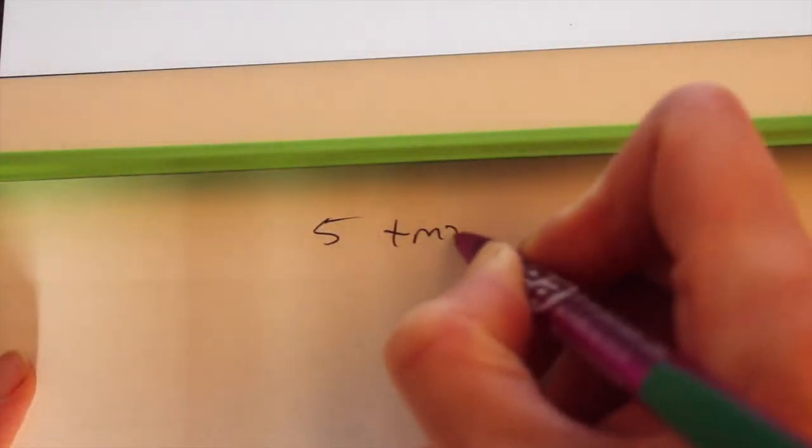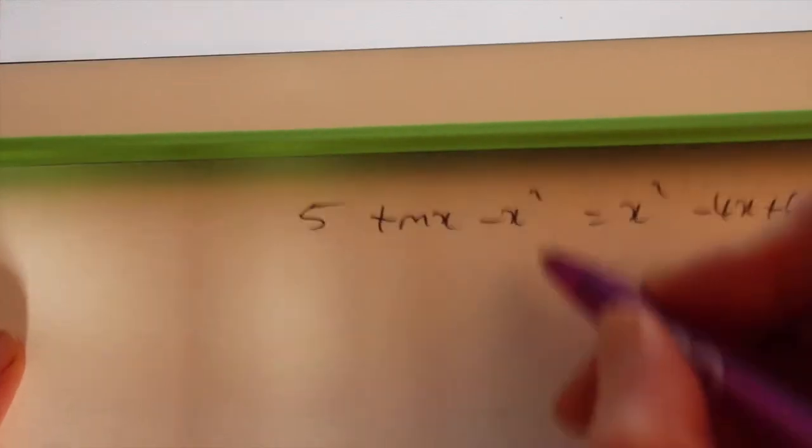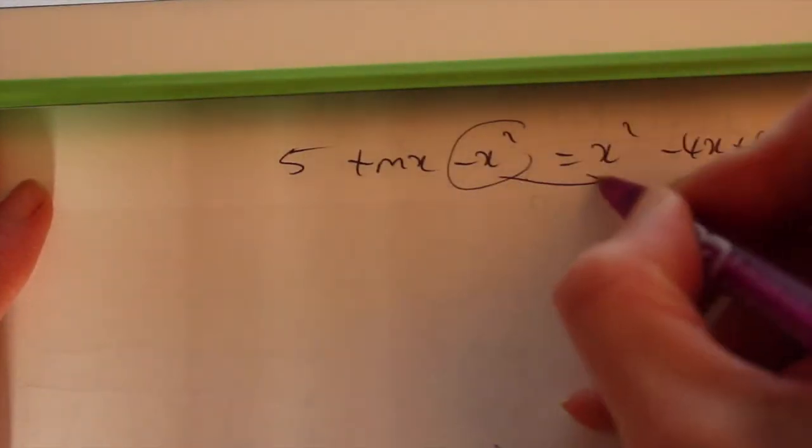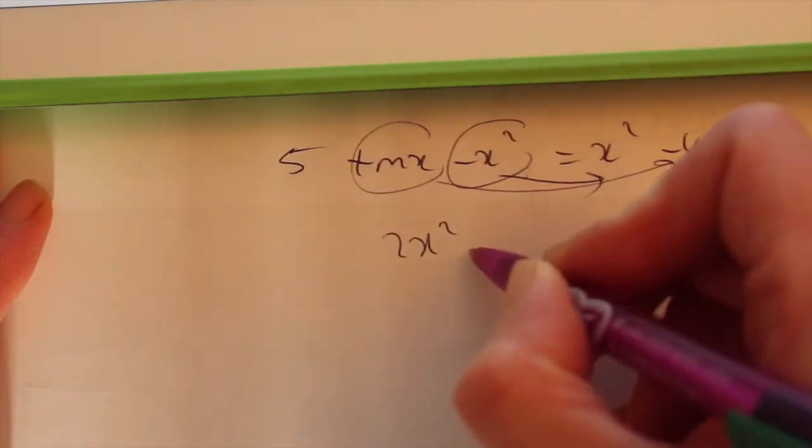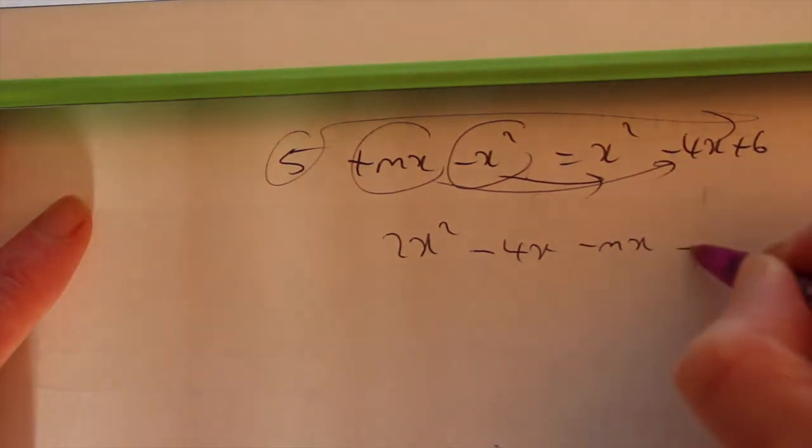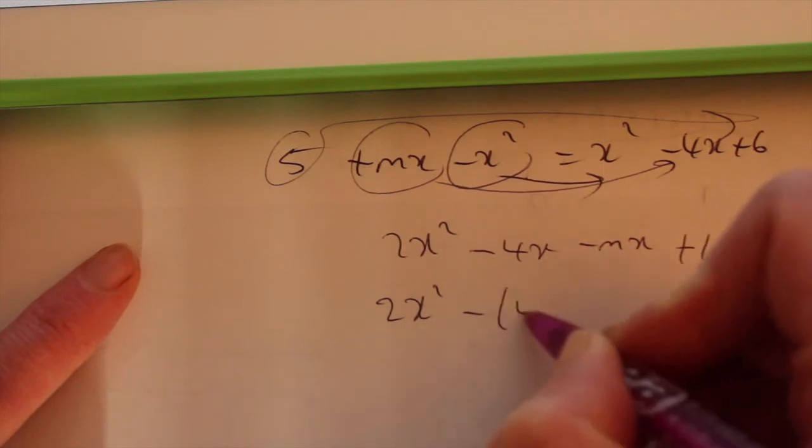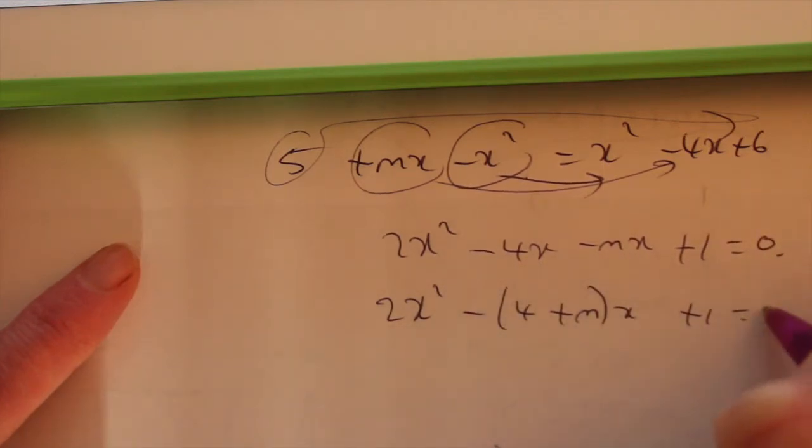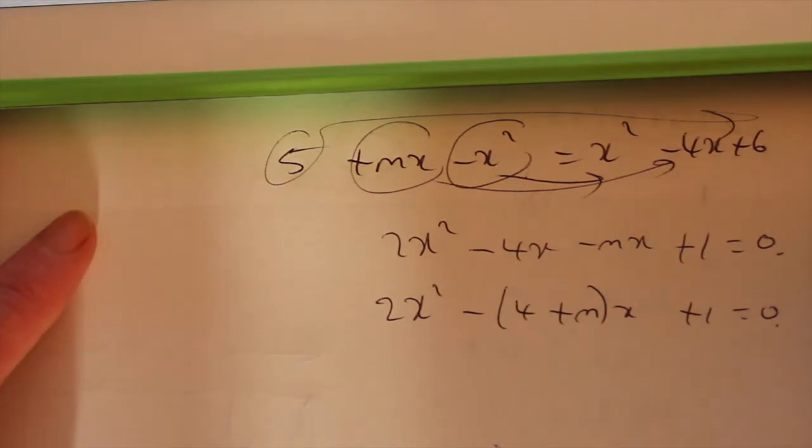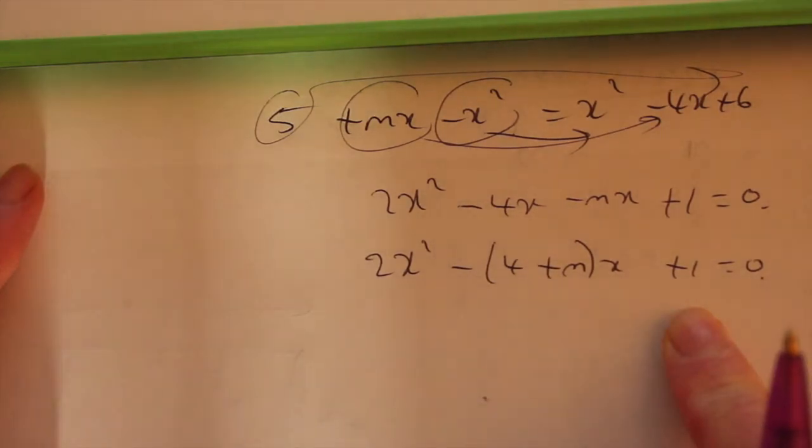5 add MX minus X squared equals X squared minus 4X plus 6. It's a quadratic equation, put everything on one side. So I'll move that over to 2X squared minus 4X minus MX, 6 minus 5 gives you 1. I could tidy it up a little bit further. I could write that as 2X squared minus 4 plus M times X add 1. Now, that would be the equation if they meet. You're told they do not meet. So that means this here has got no solution, no roots.